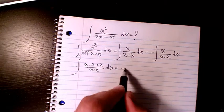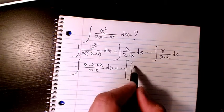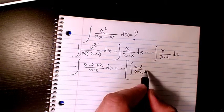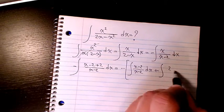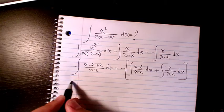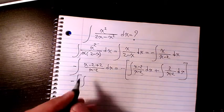So it will be negative integral of (x - 2) divided by (x - 2) dx plus integral of 2 over (x - 2) dx. These two cancel out so it's going to be 1 dx plus integration of 2 over (x - 2) dx.